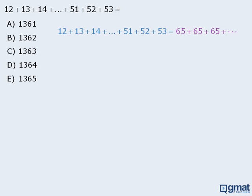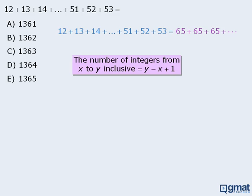Now, how many numbers are in the original sum? In other words, how many numbers are there from 12 to 53 inclusive? In the word problems module, you will learn that the number of integers from x to y inclusive is equal to y minus x plus 1. So the number of integers from 12 to 53 will be 53 minus 12 plus 1, which equals 42. So if there are 42 numbers from 12 to 53, then we will have 21 pairs of numbers that each add to 65.